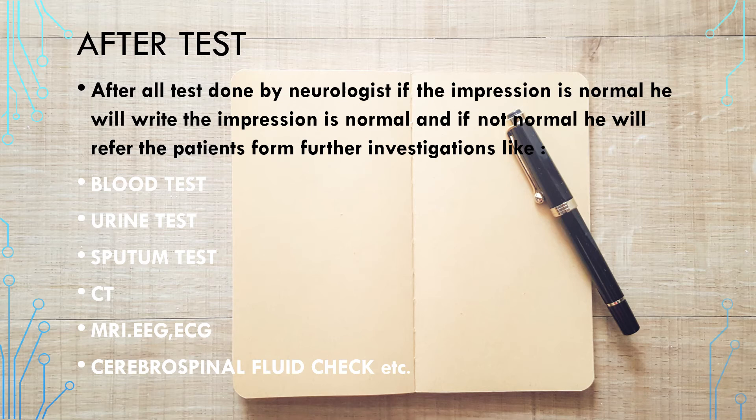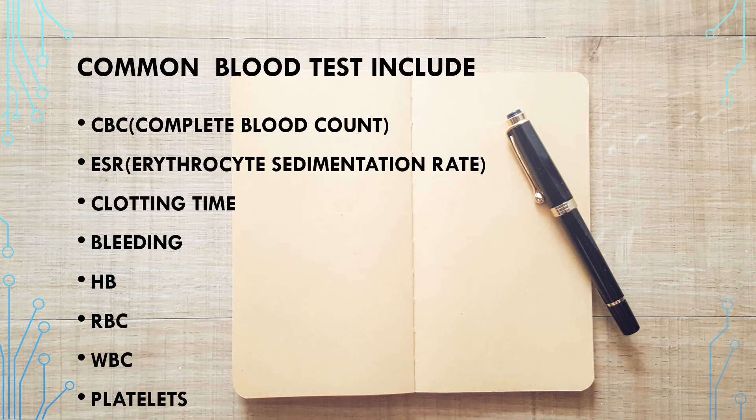After all tests are done by the neurologist, if the impression is normal, they will document it as normal. If not normal, the patient will be referred for further detailed investigations like blood test, erythrocyte sedimentation rate test, clotting time test, bleeding test, hemoglobin test, or blood chemistry test.